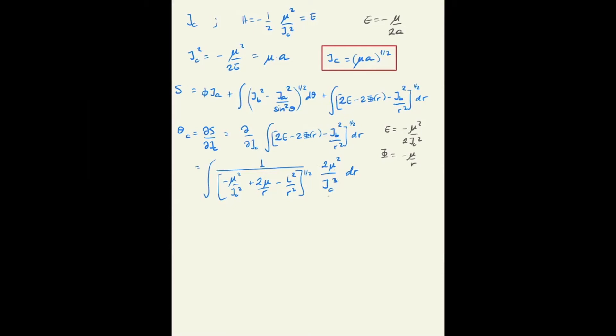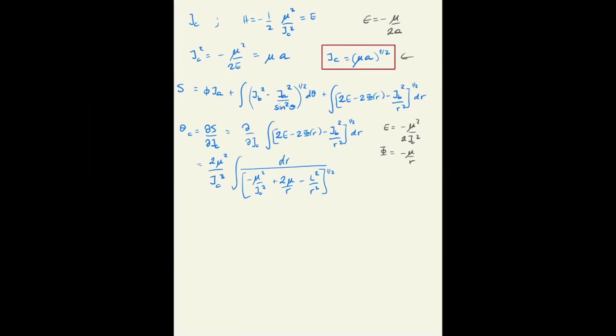Now both mu and Jc are constants so we can remove them from the integral. Let's substitute Jc by the expression found here in terms of mu and the semi-major axis. So mu squared and mu to the power of three halves, then you have only this square root left in the numerator, and the same for the Jc here inside of the square root. Substitute that by mu times a and the mu cancels.